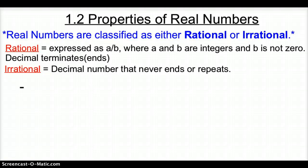Real numbers are either classified as rational or irrational. That's big key. Now rational can be expressed as a over b where a and b are integers and b is not zero. So what does this mean? It means basically that the decimal terminates or it ends or it repeats.